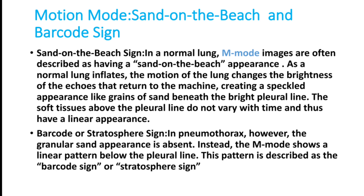If an ultrasound machine is available in the emergency room, it can easily pick up pneumothorax before shifting the patient to X-ray. On M-mode ultrasound, a normal lung shows the 'sand on the beach' sign — a speckled granular appearance below the bright pleural line due to lung motion during respiration. In pneumothorax, this disappears and is replaced by the 'barcode' sign, also called the stratosphere sign — a linear pattern below the pleural line.